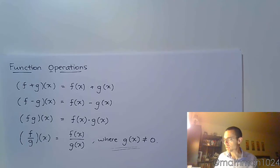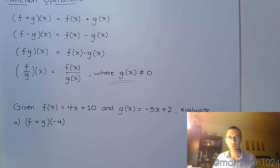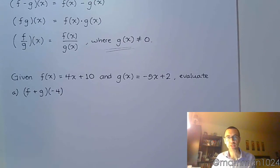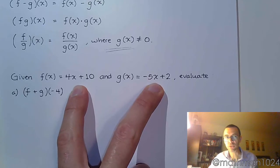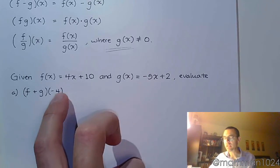So let's see what this looks like with some examples. If I tell you that f(x) = 4x + 10 and g(x) = -5x + 2, let's evaluate (f + g)(-4). Now there's an easy way and a hard way of doing it. The hard way is to take these two variable expressions, add them together as variable expressions, and then plug in negative 4.